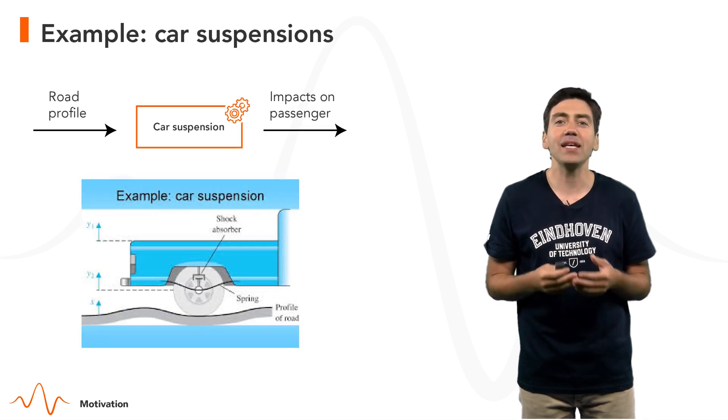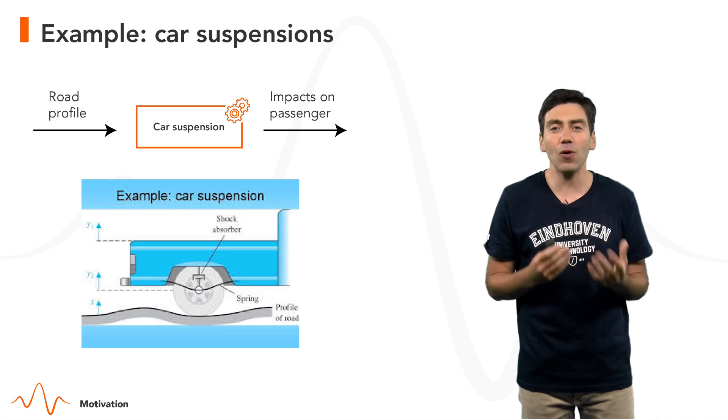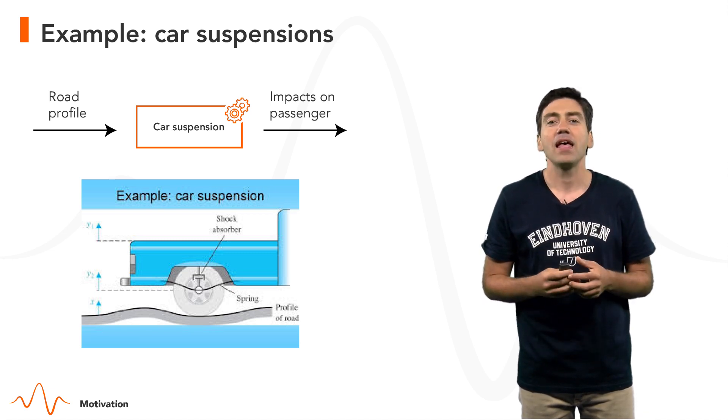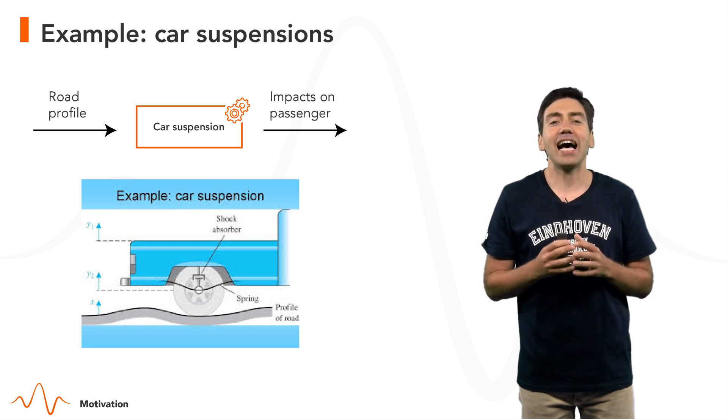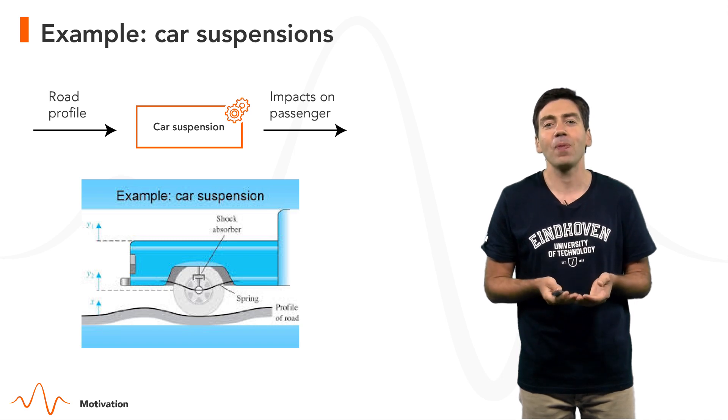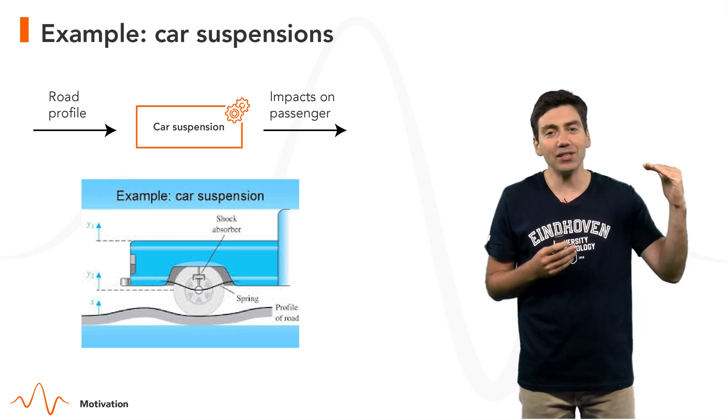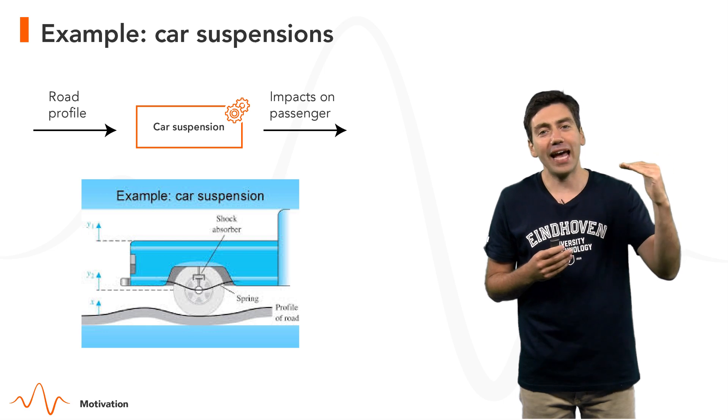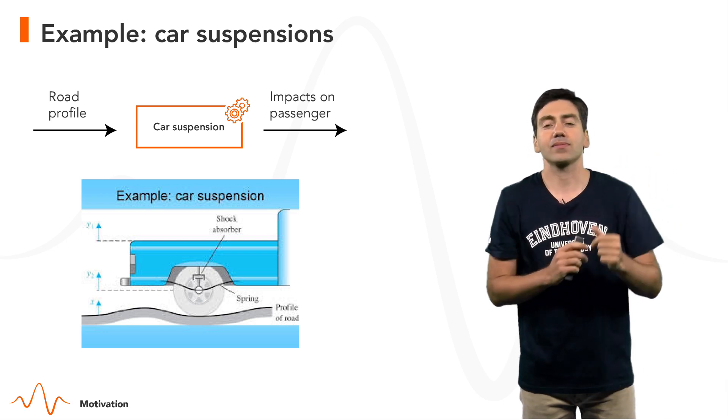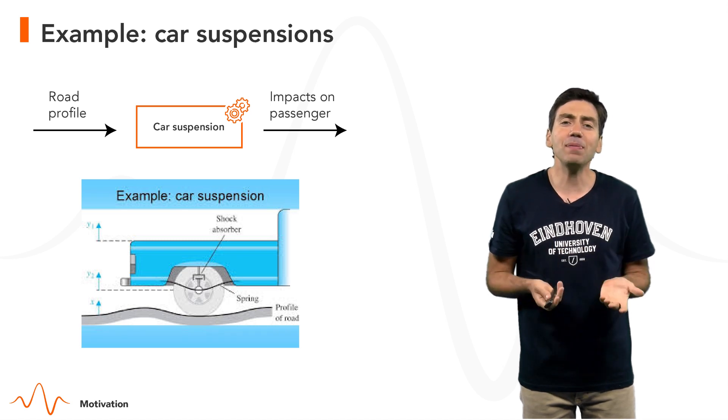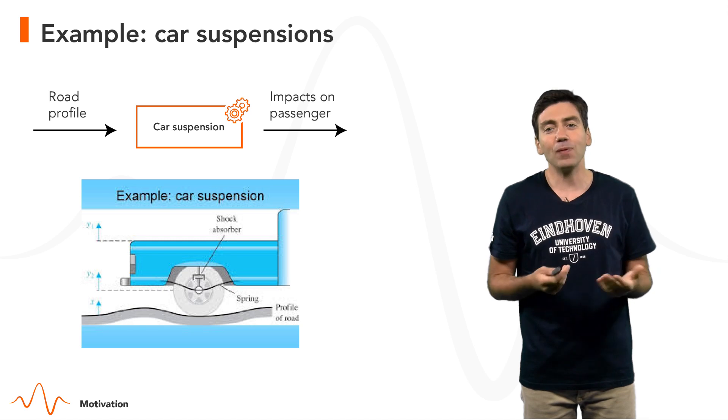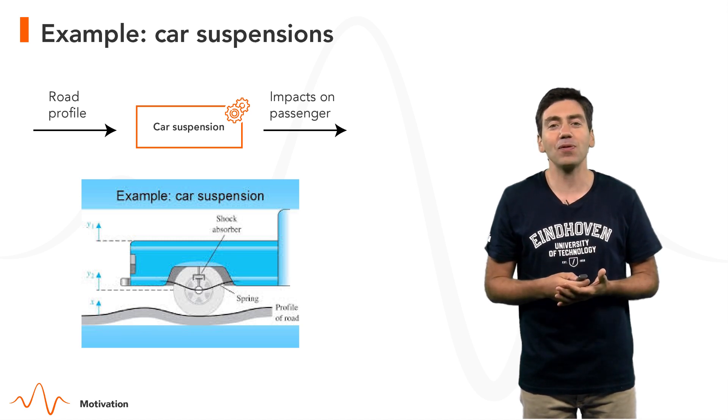A related problem is to predict the impact of road bumps on the comfort of a passenger. The input here is the height of the road bumps that generate reaction forces to the suspension system of the vehicle. And the output is the deviation of the car along the axis perpendicular to the road. We want to keep these deviations as close as possible to zero. Again, with simplified models, this can be answered through convolution.